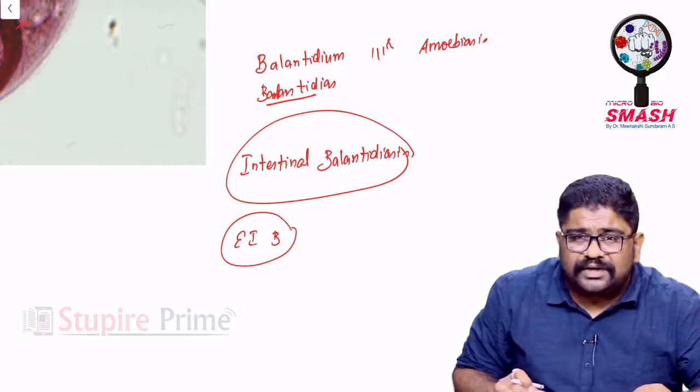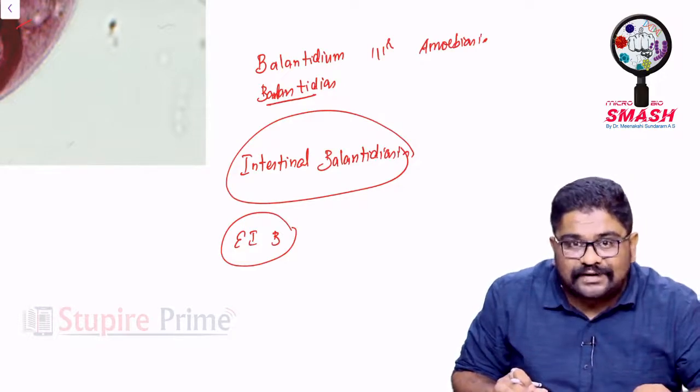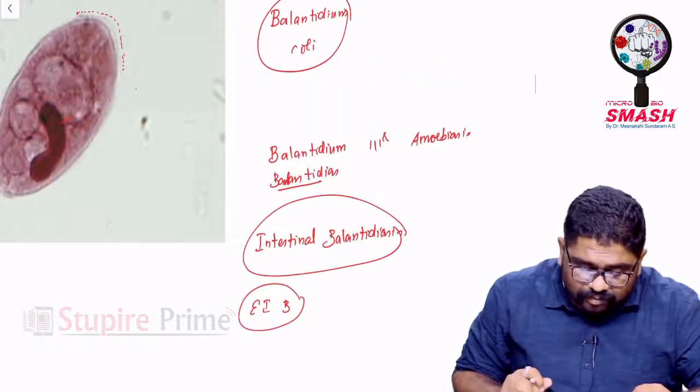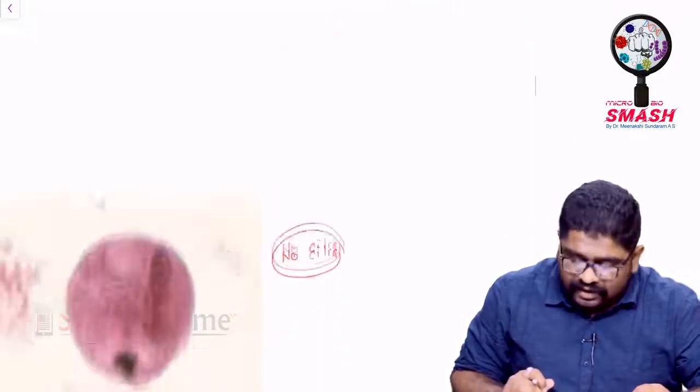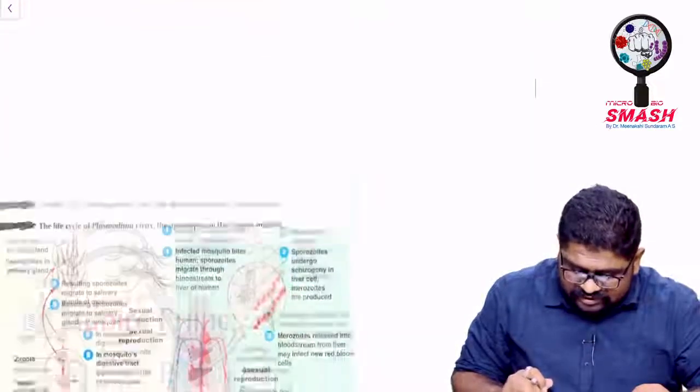The problem is that much of abscess formation is a property of Entamoeba histolytica. Less abscesses are formed by Balantidium. Also, this is capable of causing high-grade fever and chills along with the abscesses.